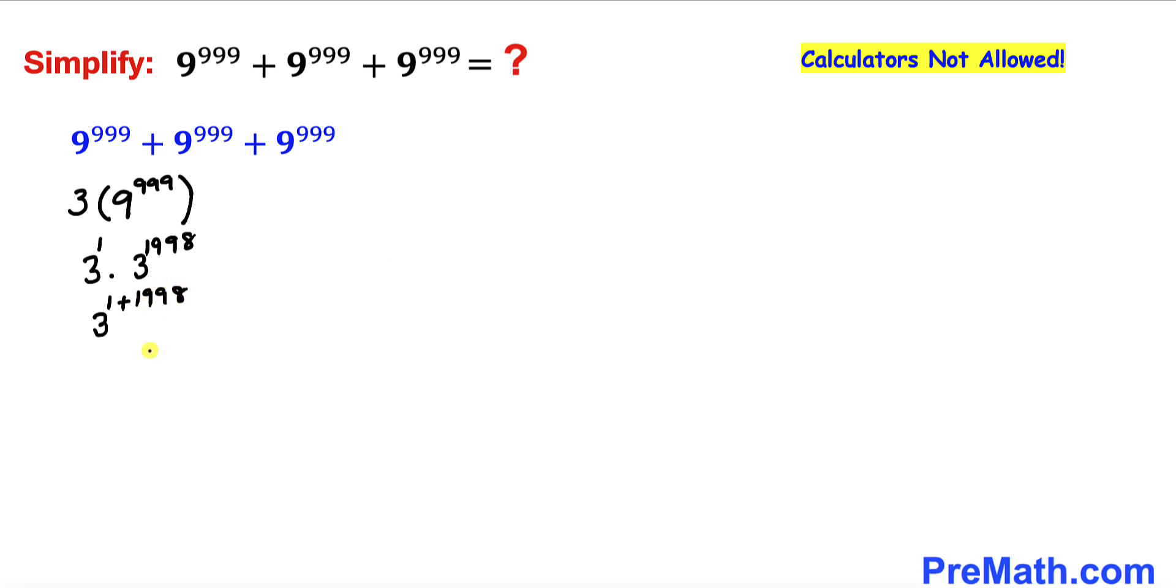So let's go ahead and add them: 3^(1 + 1998). Thus our answer turns out to be 3^1999.